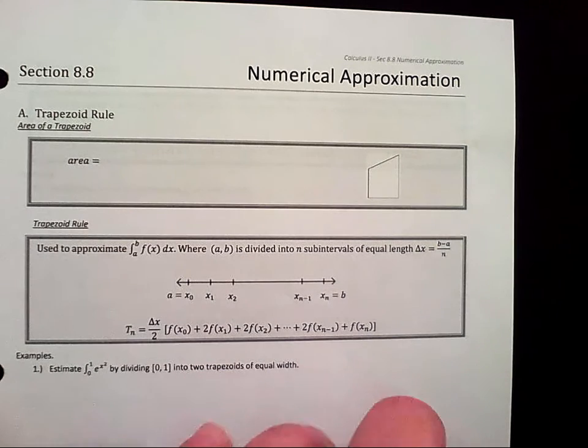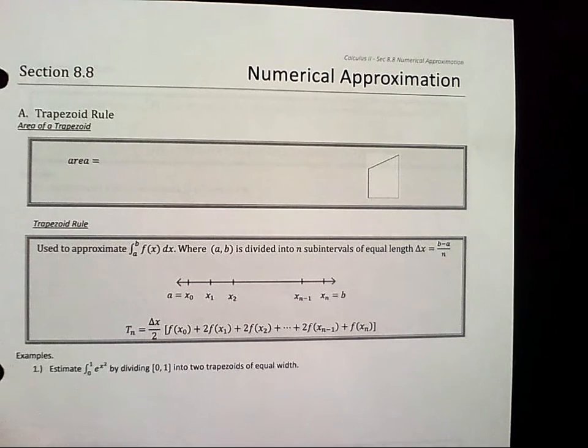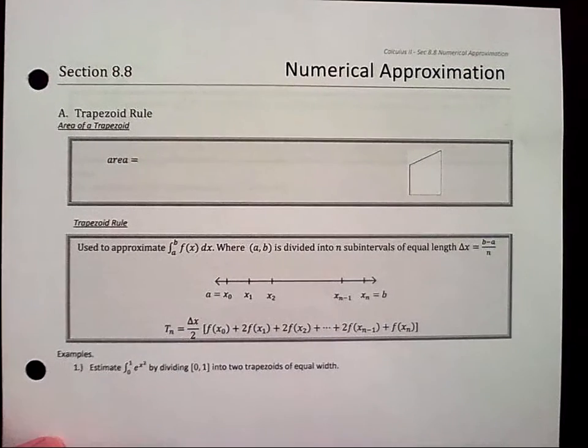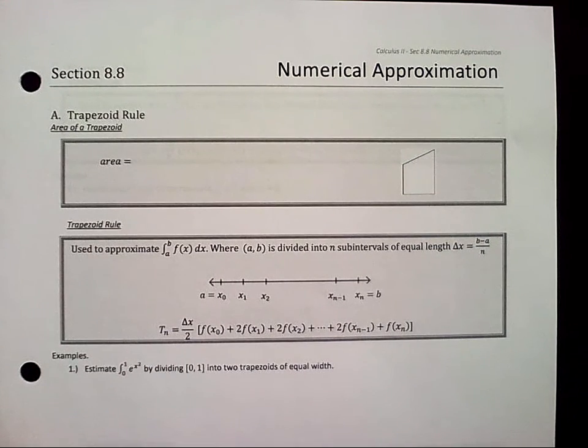Here we're going to do a couple more numerical approximations. I don't know why this is later on, but it always shows up like that. So the numerical approximations we're going to do now are the trapezoid rule.